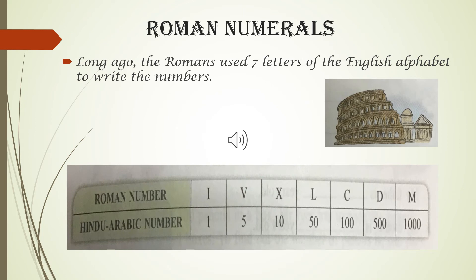Long ago, the Romans used 7 letters of the English alphabet as 7 basic symbol numbers. Roman numerals originated in ancient Rome. Romans did not have 0 in their number system and were not aware of the place value system either.